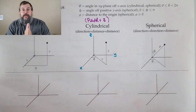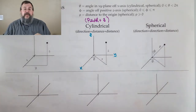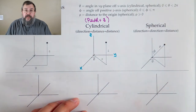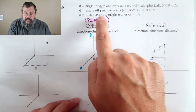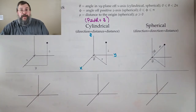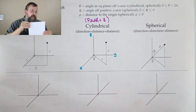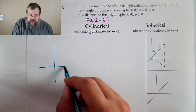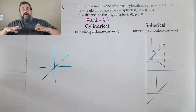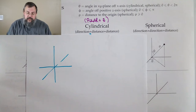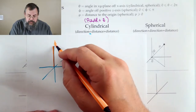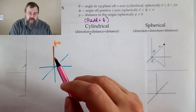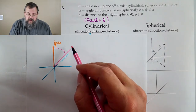Theta works the same as before; rho tells you how far to go — no surprises there. I want to take a moment to talk about phi, which is new. Phi is only in spherical coordinates. It's the angle off the positive z-axis. Let's take a little time to understand what that means.